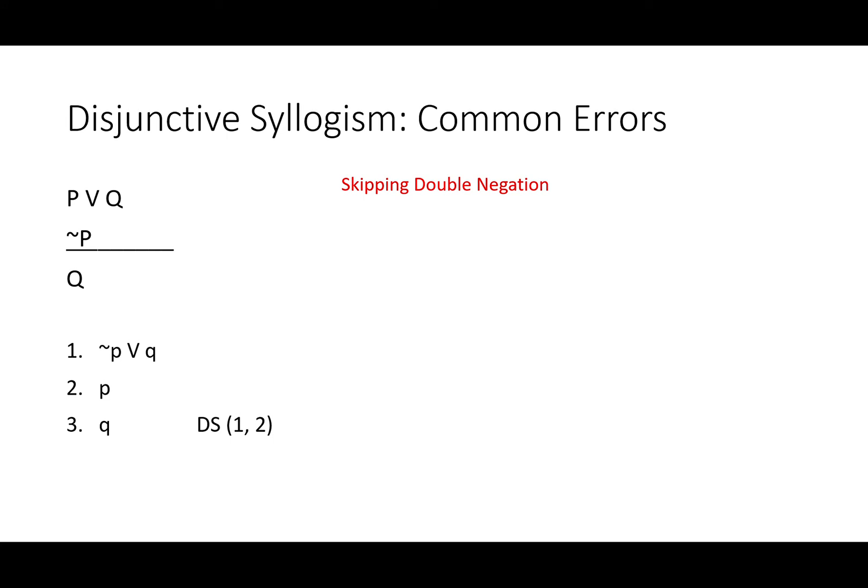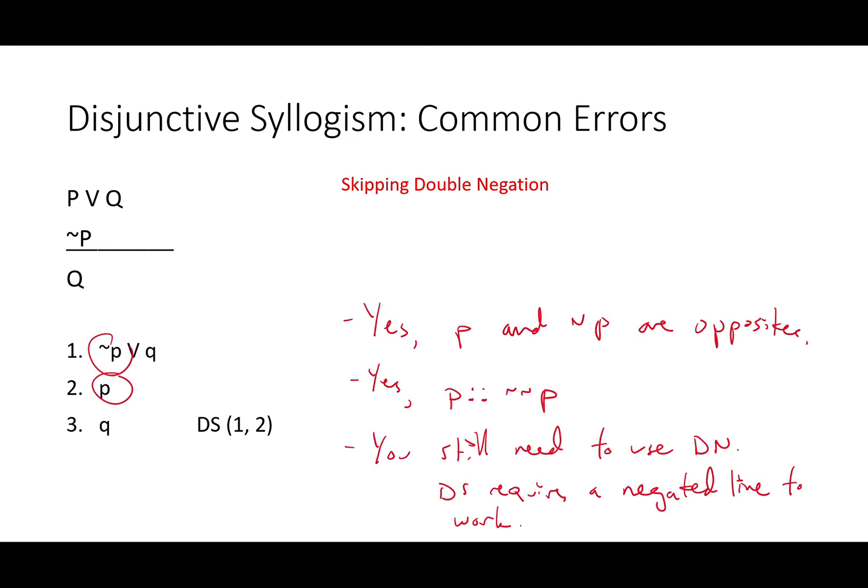Here's our common error and what it looks like. Either not P or Q. P, so Q. Remember that logic is really all about spelling out every step you do so that you can see even the simplest steps that you always skip over in your head, so that you can program a computer, so that you can argue with someone who doesn't trust you, even a little bit. Yes, P and Not P are opposites. You know it and I know it. P and Not Not P are logical equivalents. You still need to use double negation. Disjunctive syllogism requires a negated line to work, and that's just how the rule works.